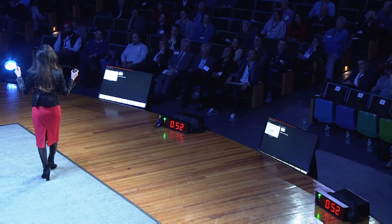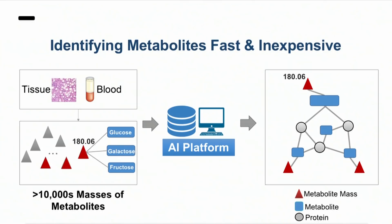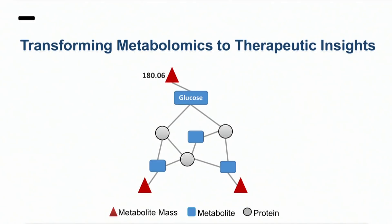What we are doing instead, we are using our AI platform. We find an optimum network that connects these metabolite masses together, and through these connections we can figure out, for example, that this mass of 180 is glucose. This optimum network further provides us with critical therapeutic insight. The network itself represents dysregulated disease pathways and processes. The proteins in this network could be therapeutic targets, and some of those metabolites could be an existing drug.